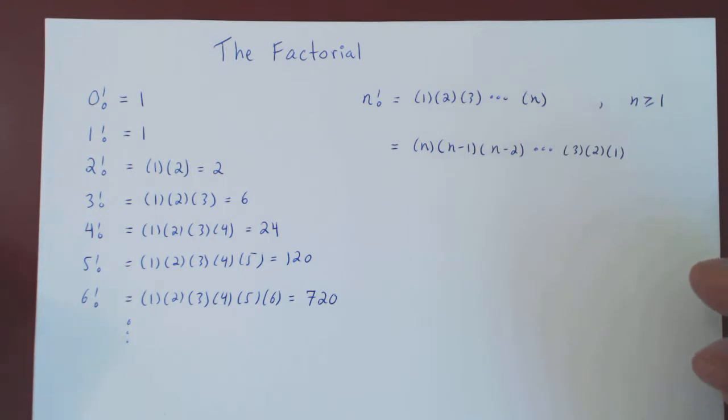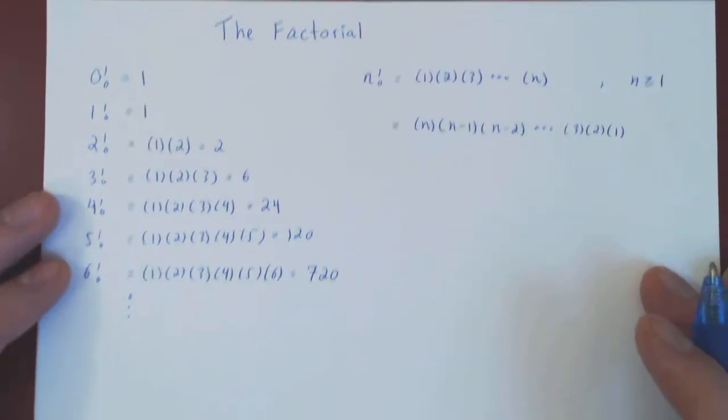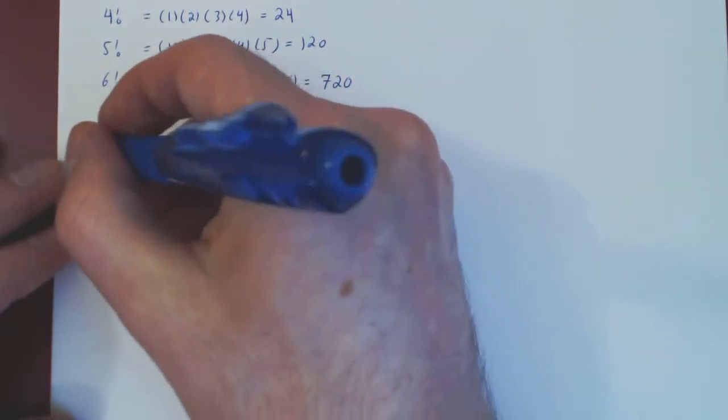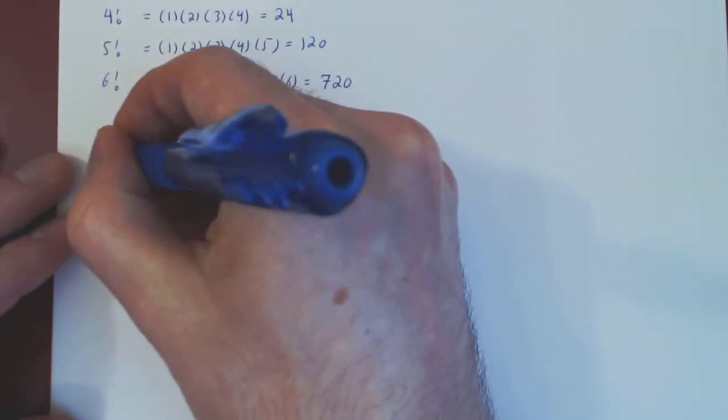I want to give you now just two examples of how we can simplify expressions that contain factorials. The idea is, if you have factorials in a fraction, expand the larger factorial until you hit the smaller factorial, and then you can simplify almost everything. So here are two examples. And what we're asking is simply to simplify.